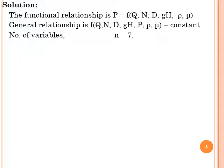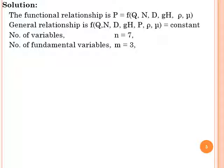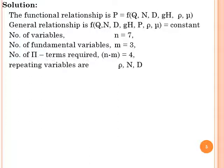In this problem, there are 7 variables influencing turbomachine performance, so N = 7. The number of fundamental dimensions M = 3, which are M, L, and T. The number of Pi terms is calculated as N − M = 7 − 3 = 4. So we obtain 4 different Pi terms.